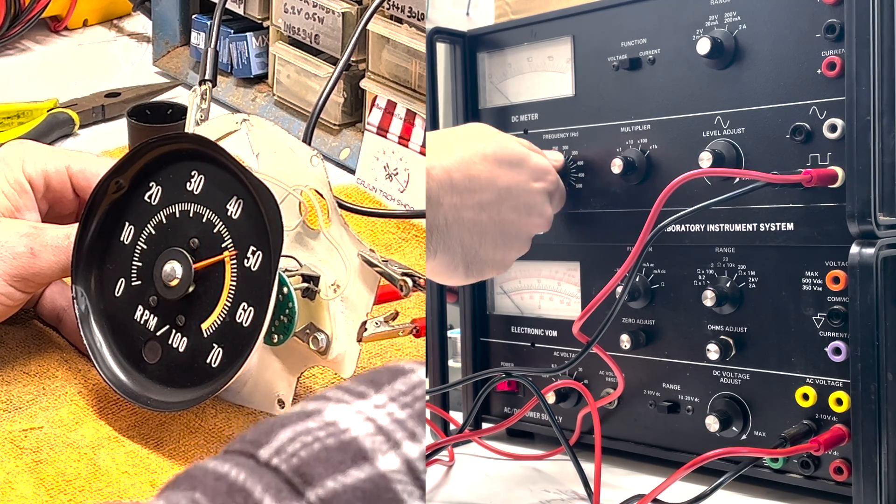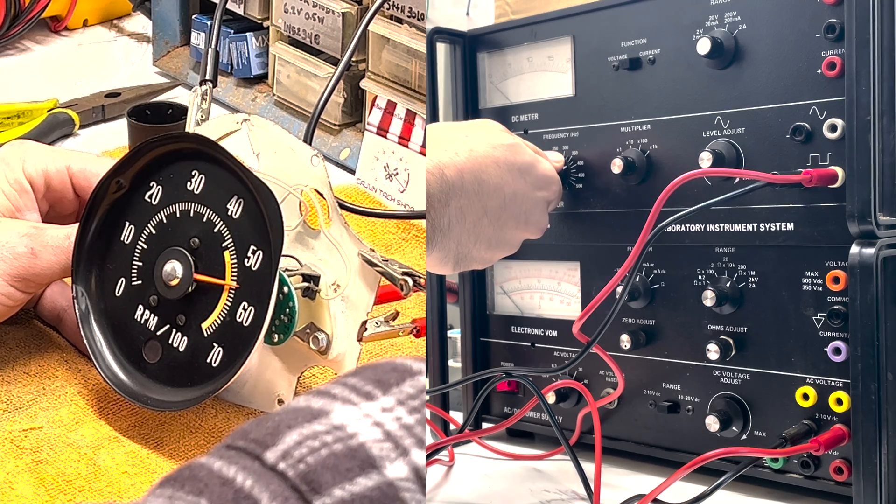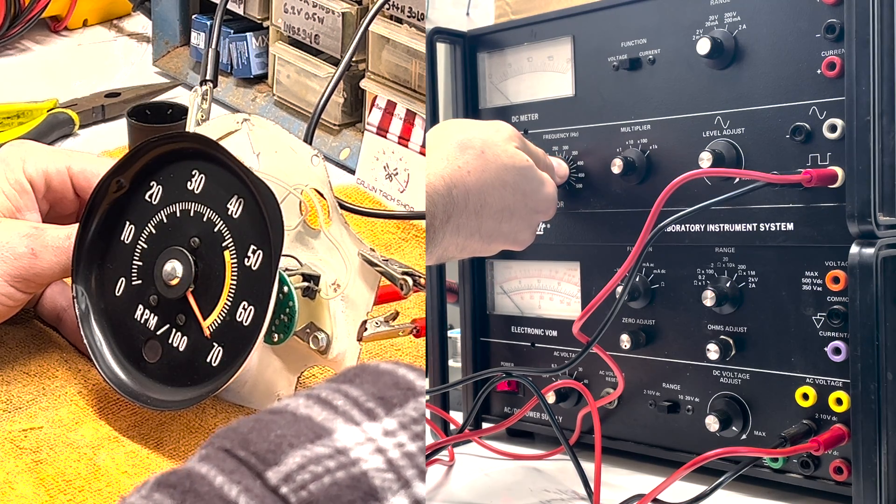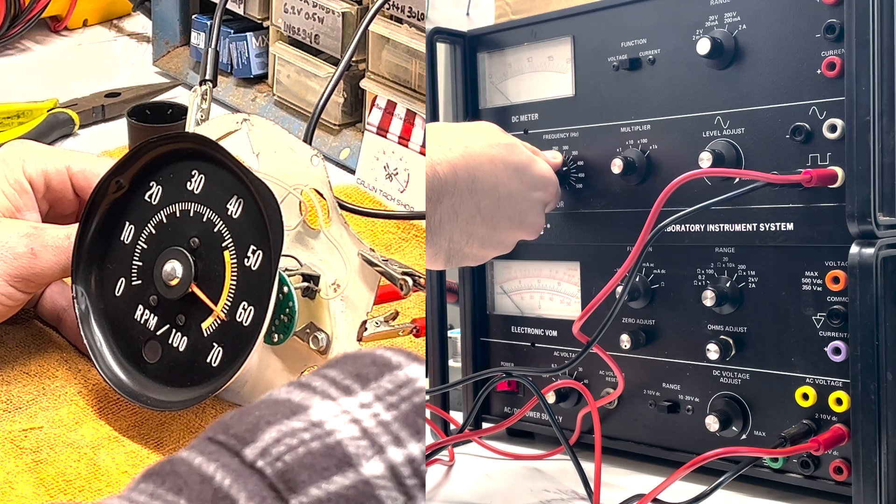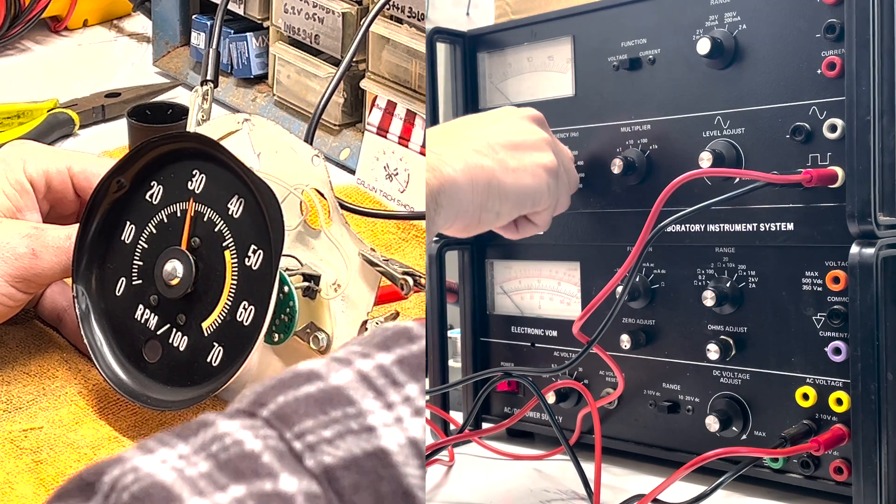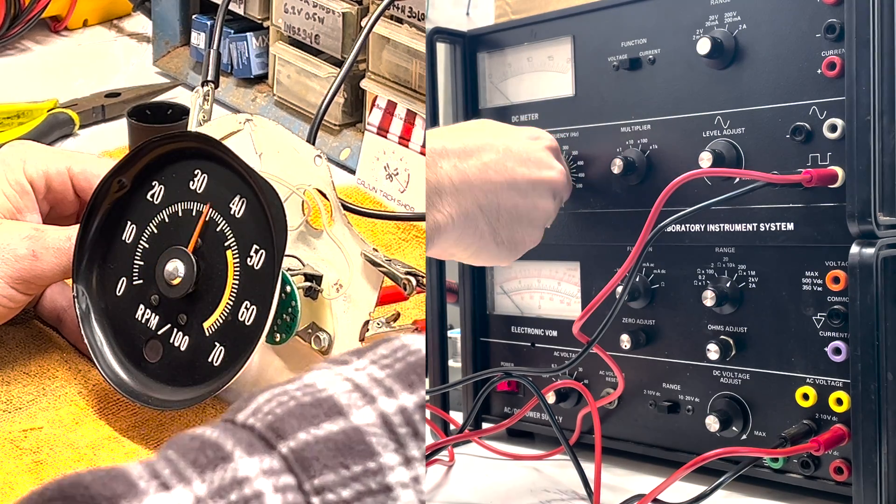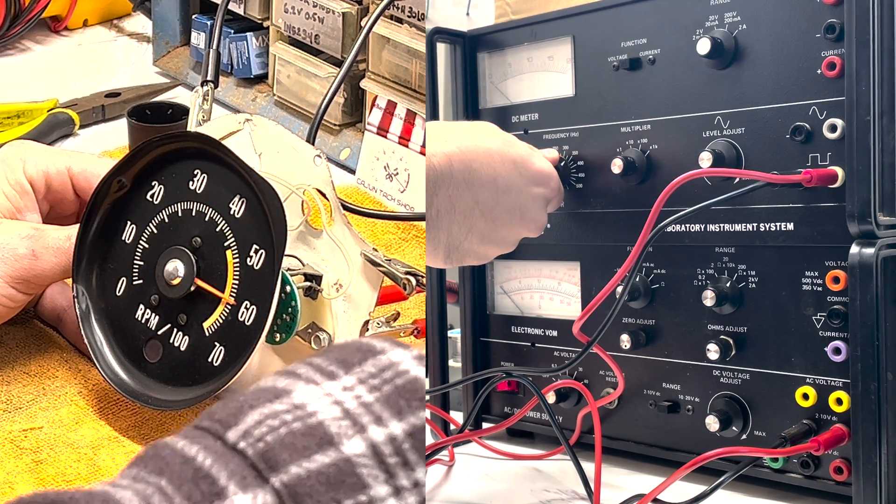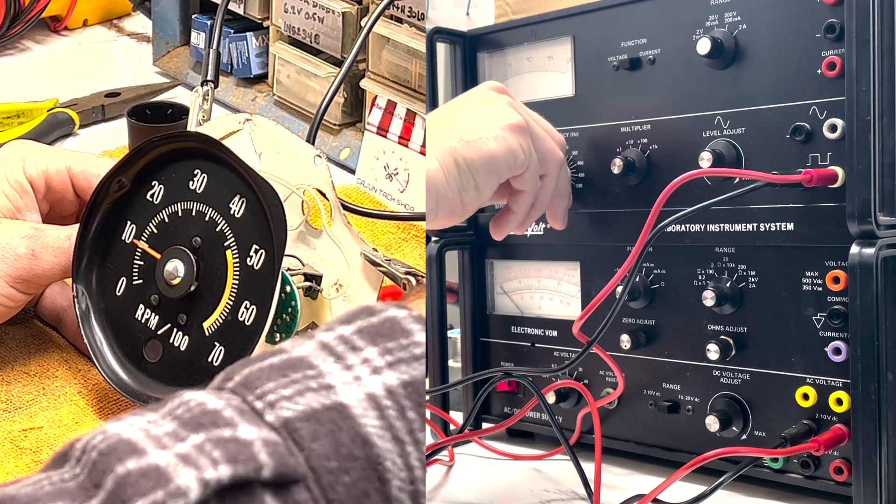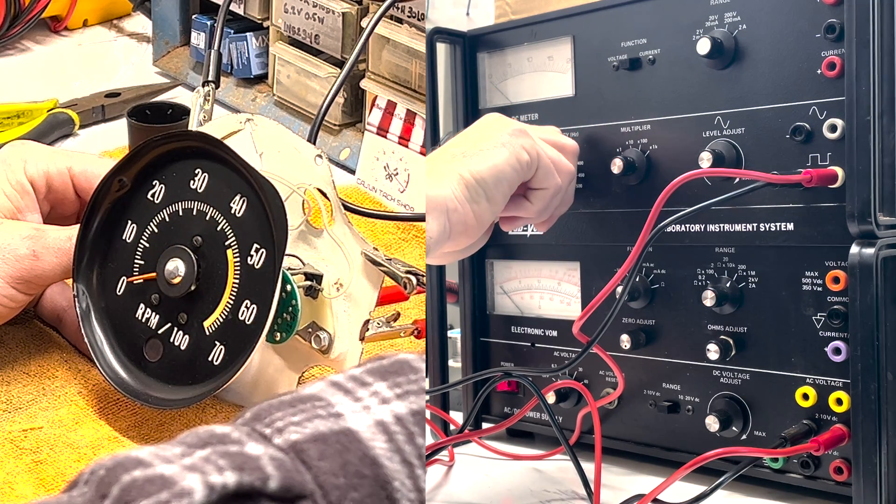Even though my engine will never see 7,000 RPM, it's nice to have that ability. It's right to 7,000. Bring it right back down and we can see it goes through full sweep, doesn't get hung up on anything, nice and smooth, and right back down to zero where it should be.